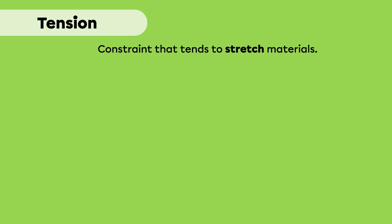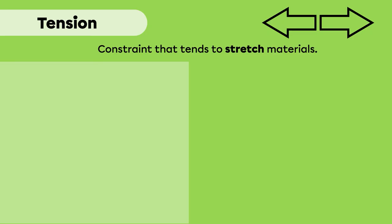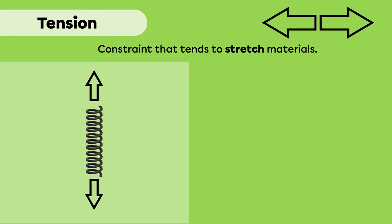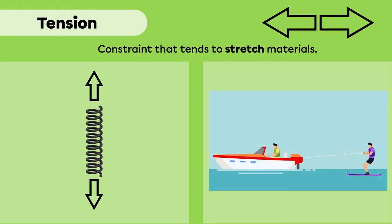Tension is represented by this symbol. For example, if tension forces are applied to a spring — meaning forces pulling in opposite directions are applied to the outer ends of the spring — the coils will move away from each other. Tension forces are also present in water skiing. The person on skis pulls the rope, which is dragged by the boat driver. The skier applies a force to one end of the rope, while the boat exerts a force in the opposite direction at the other end.